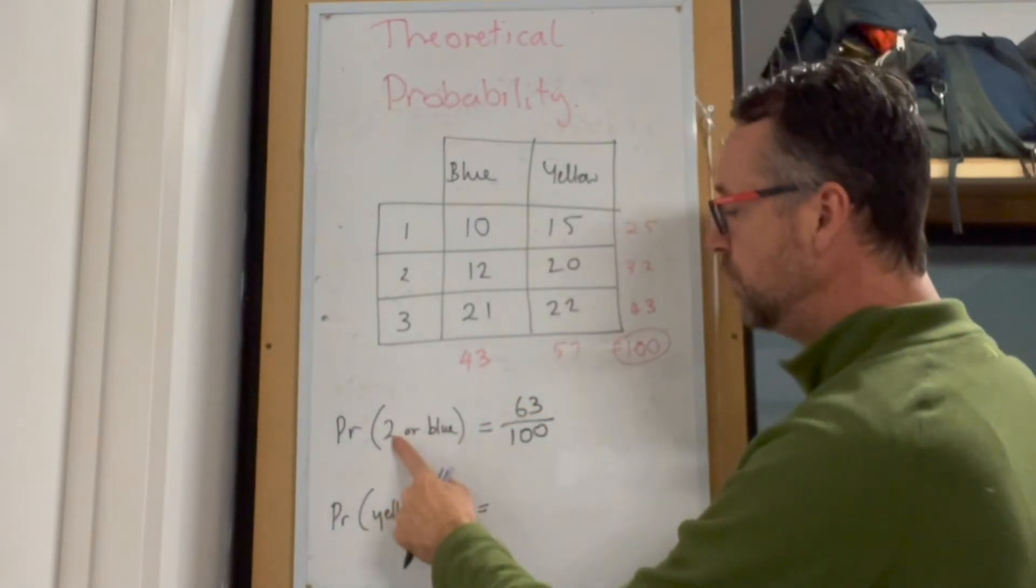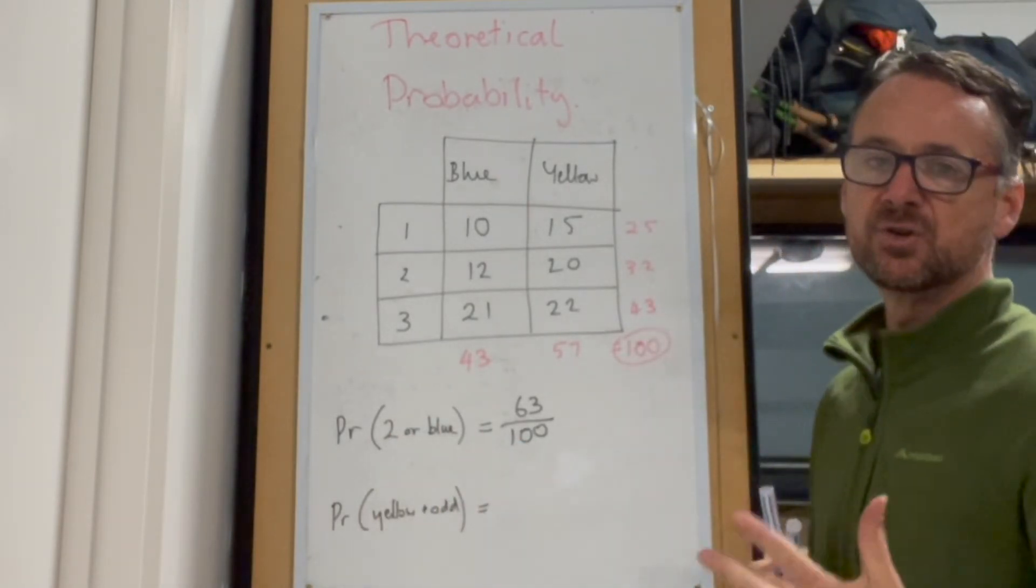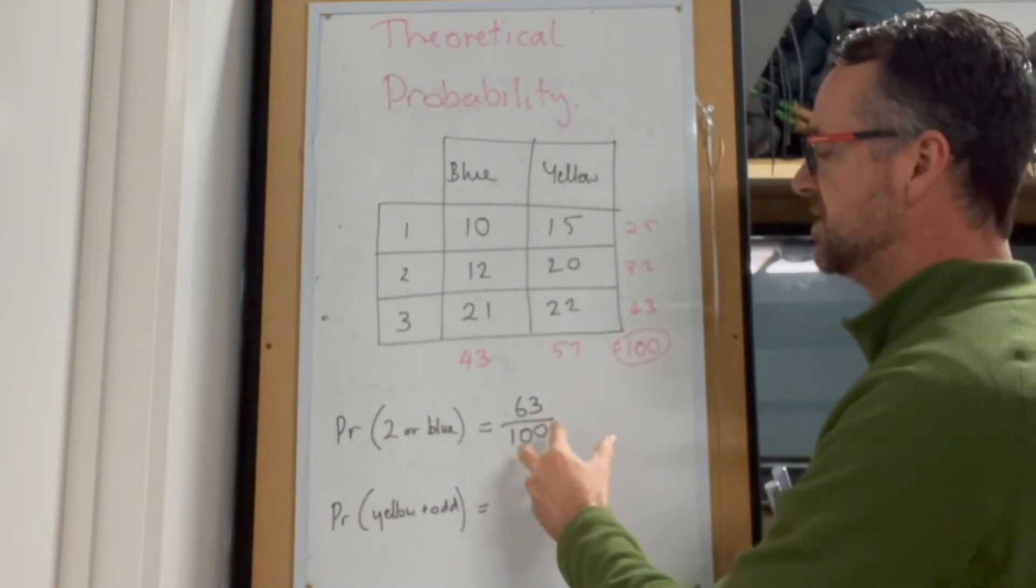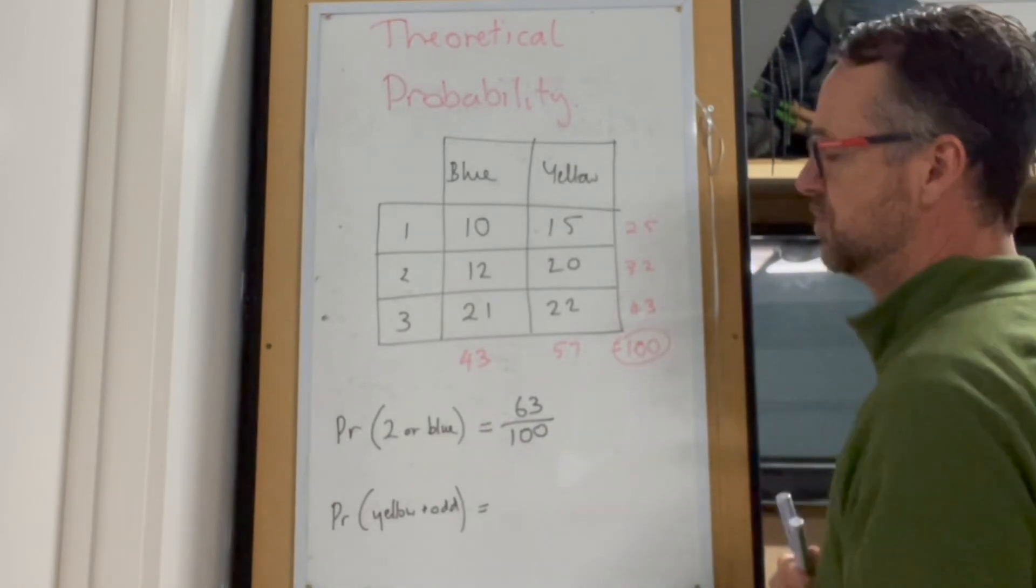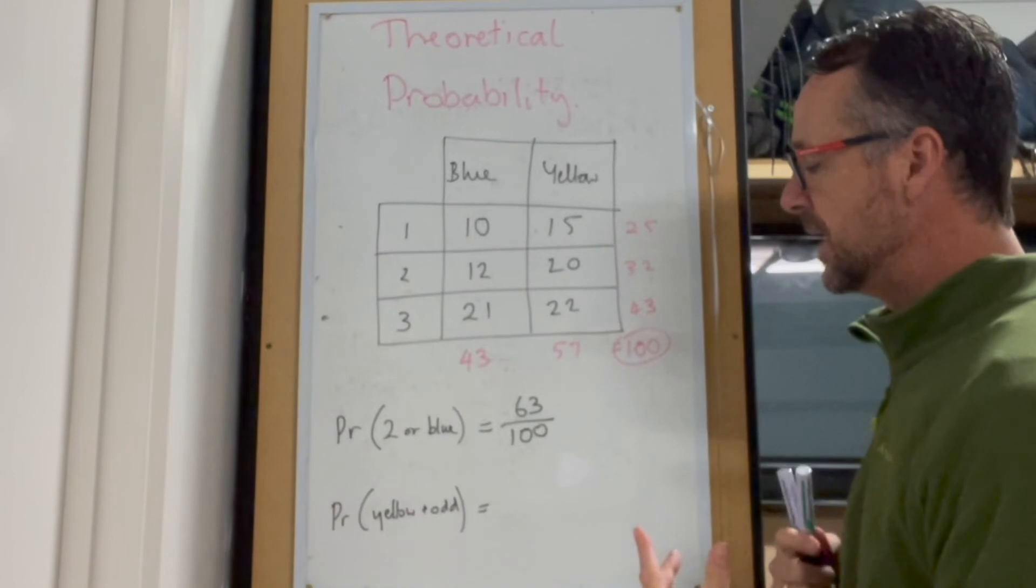I've got it being blue or 2. And effectively, what you could do there is, what are the chances of it being not blue and not 2? That would give you the same sort of outcome.